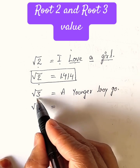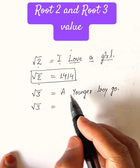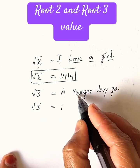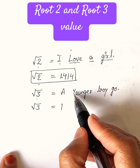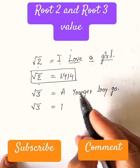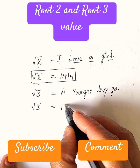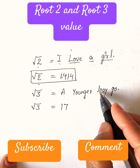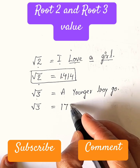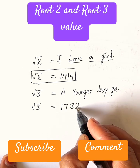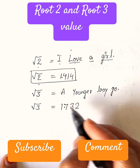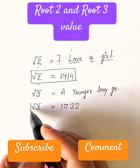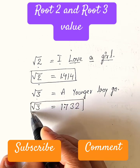And root 3 is equals to 'a younger boy.' The letters represent 1, 2, 3, 1, 2 — giving 1.732. This is the value of root 3.